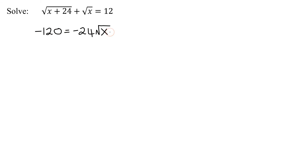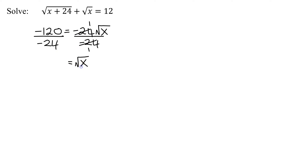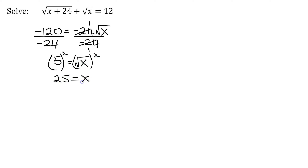Here's the equation I landed up with at the bottom of my last slide. I'm going to divide both sides by negative 24. So I get the square root of x equals negative 120 divided by negative 24, which is positive 5. I've isolated my square root. Now all I have to do is square both sides. 5 squared is 25, and the square root of x all squared is x. So I have found my solution — x equals 25.